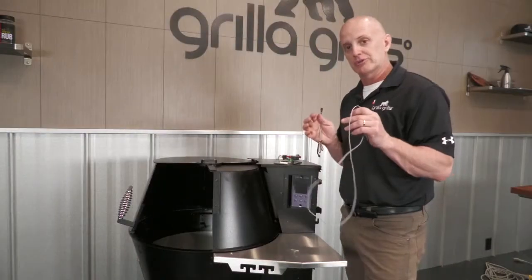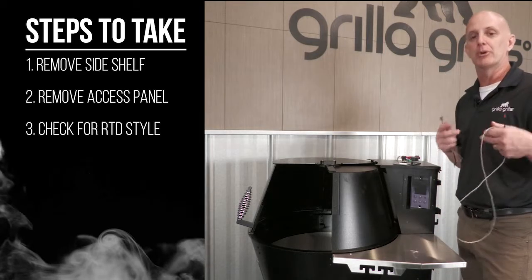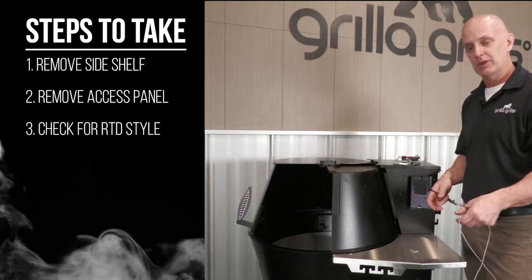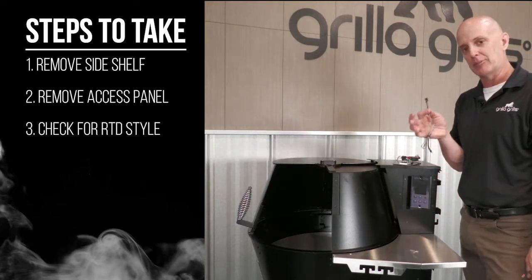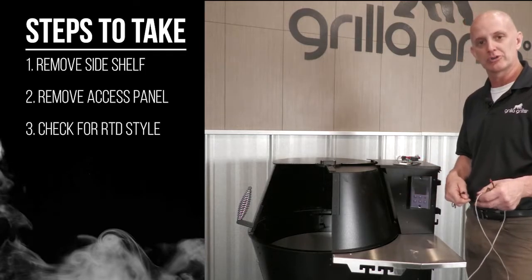There are two styles of RTDs. In either case, you have to remove the shelf and lower access panel to get the most access. Once you get in there, you'll find out if you have a black plug in this area. If so, simply unplug it, pull it out, and you're good to go.